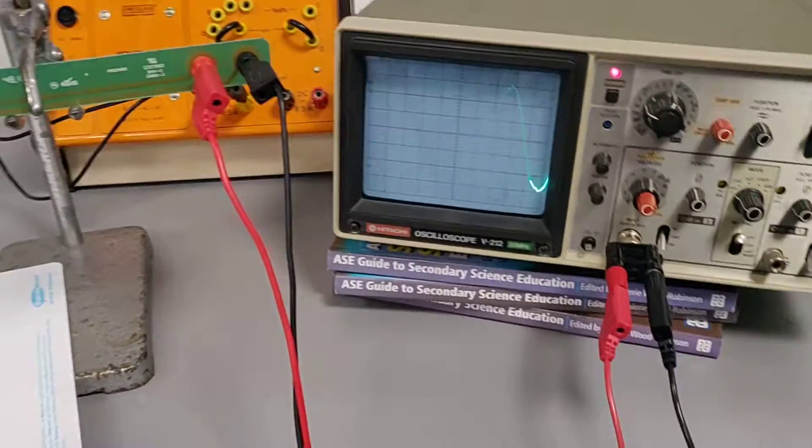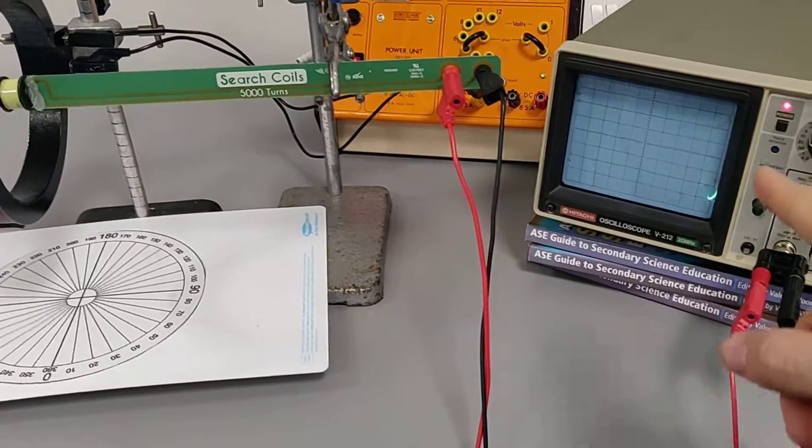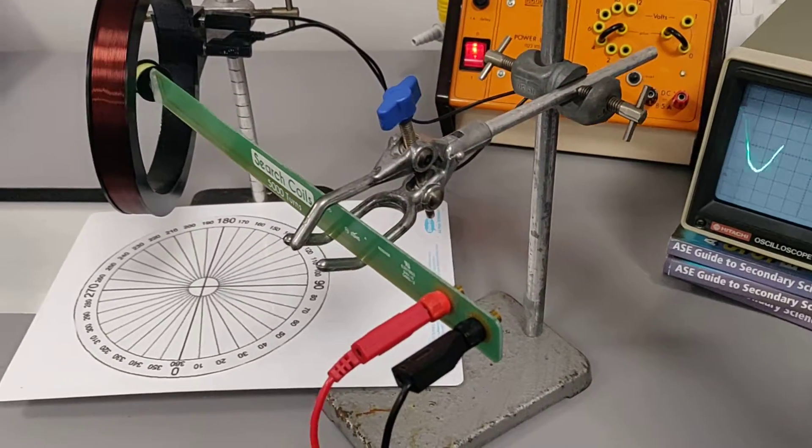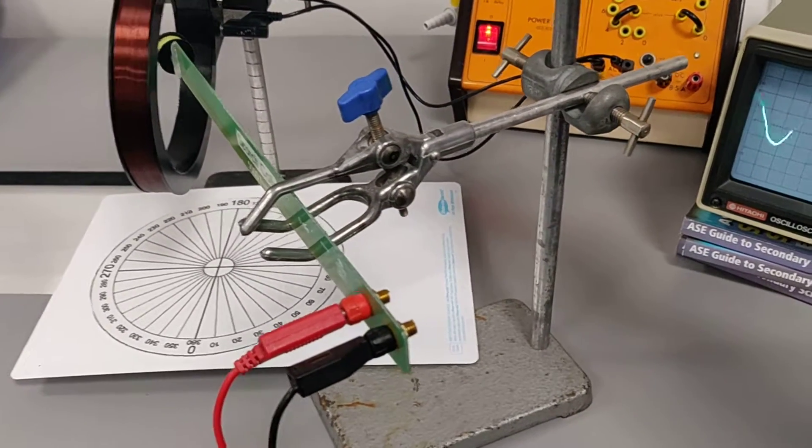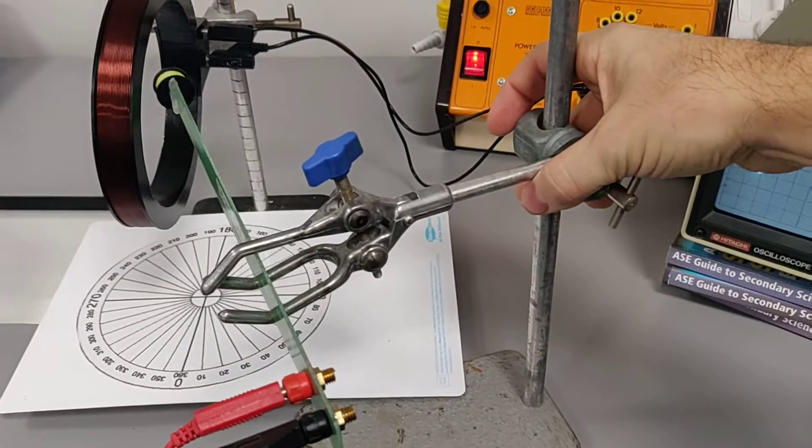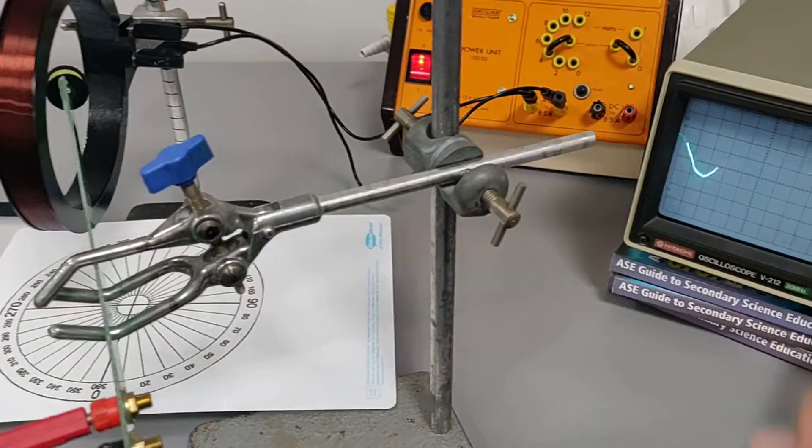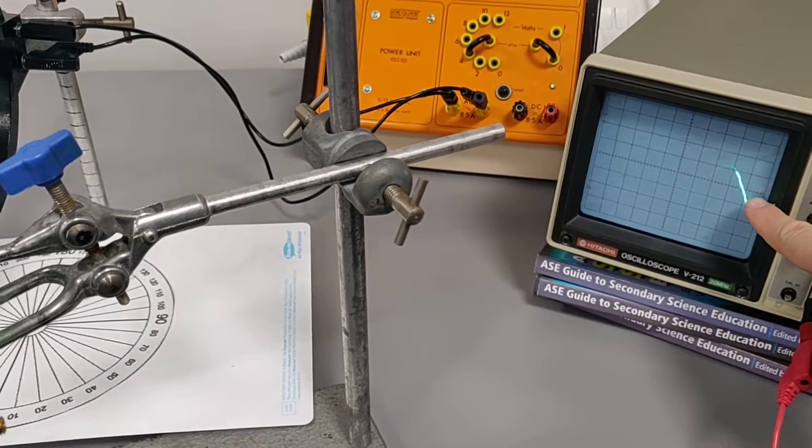So in the course of this experiment, you vary the angle and you measure the induced EMF each time. So if I vary the angle, I'll do quite an exaggerated one so you can see an immediate effect. You can see if I turn it so that the angle now is substantially changed in the field, I hope you can see that the EMF has reduced.